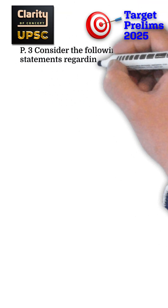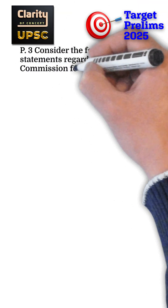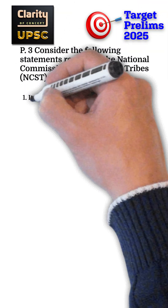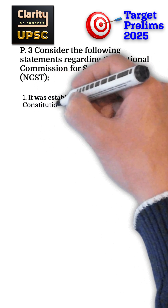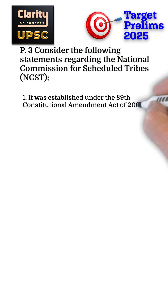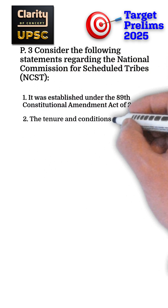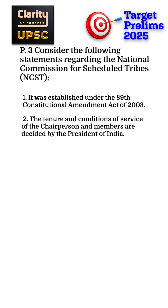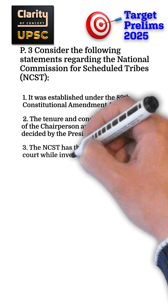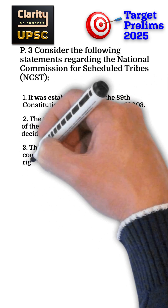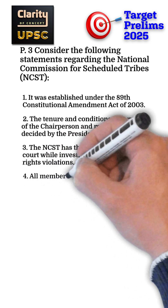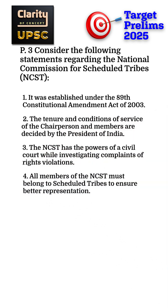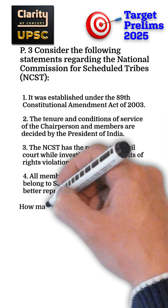Consider the following statements regarding the National Commission for Scheduled Tribes. Statement 1: It was established under the 89th Constitutional Amendment Act 2003. Statement 2: The tenure and conditions of service are determined by the President. Statement 3: The NCST has the powers of a civil court while investigating complaints of rights violations. Statement 4: All members of the NCST must belong to scheduled tribes to ensure better representation.